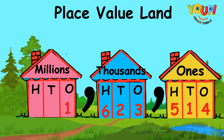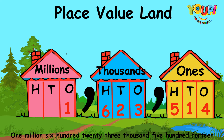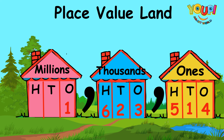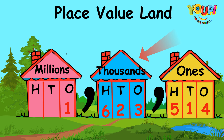For example: one million, six hundred twenty-three thousand, five hundred fourteen. We had the first comma for the Millions, so we said "one million." Then six hundred twenty-three, and then we reached the next comma or gate — the Thousands family — so we said "six hundred twenty-three thousand, five hundred fourteen."